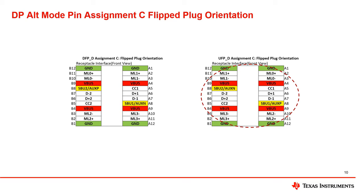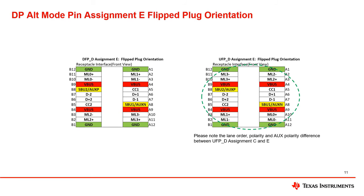This graph shows the DP main link and aux mapping to the USB-C for the flipped plug orientation of assignment C. The graph on the left shows the assignment C lane mapping for the downstream facing port, or the source, while the graph on the right shows the assignment C mapping for the upstream facing port, or the sink. Again, please note the lane mapping difference between the source and the sink. For assignment E in the flipped plug orientation, please note that while the mapping of main link and aux is the same between assignment C and E on the source side, the main link lane order, polarity, and aux polarity are different between assignment C and assignment E on the sink side.